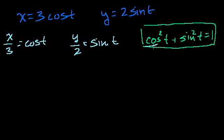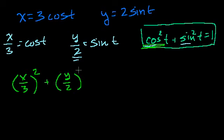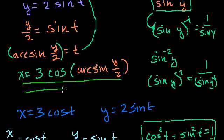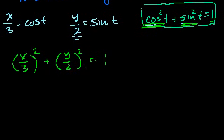And then we can use this trigonometric identity. We can just, instead of the cosine of t, we can substitute x over 3, and instead of the sine of t, we can substitute y over 2, and you get x over 3 squared plus y over 2 squared is equal to 1. And now this is starting to look a lot better. We could simplify it a little bit. We could say this is equal to x squared over 9 plus y squared over 4 is equal to 1.